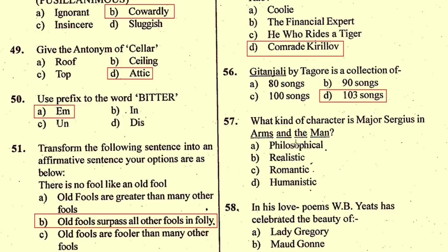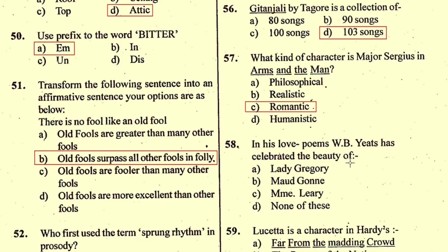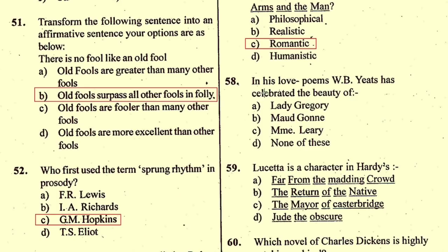Question number 57: What kind of character is Major Sergius in 'Arms and the Man'? The right option is C, romantic. Question number 58: In his love poems, W.B. Yeats celebrated the beauty of — the right option is B, Maud Gonne.